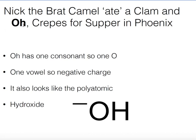The 'O' in the mnemonic gives us a simple but really common polyatomic. O has one consonant, so one oxygen, and one vowel, giving a negative one charge. That looks like the polyatomic hydroxide, OH^-. This is one of the polyatomics that ends in 'ide.' There aren't many — maybe five total, three that you typically need to know. They tend to be poisonous; hydroxide is a really strong base found in Drano.